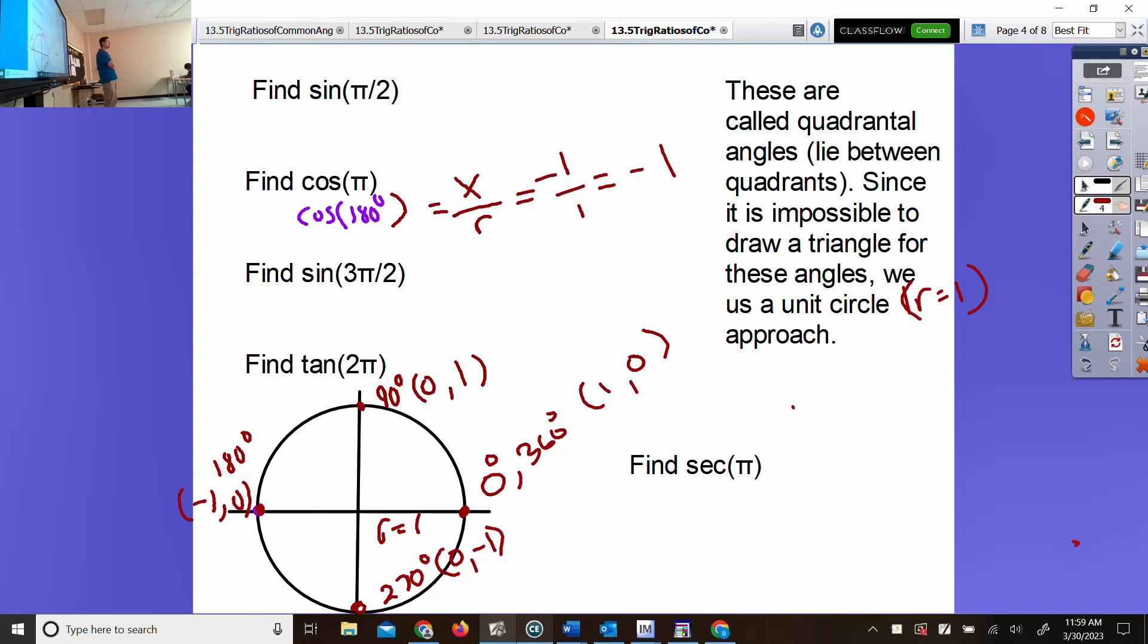Sine π/2. π/2 is 90 degrees. It's a 90-degree angle. From the circular approach, what's the sine ratio? y over r. If you're at 90 degrees, what's the y-coordinate? One. What's the radius? One. Answer is one.